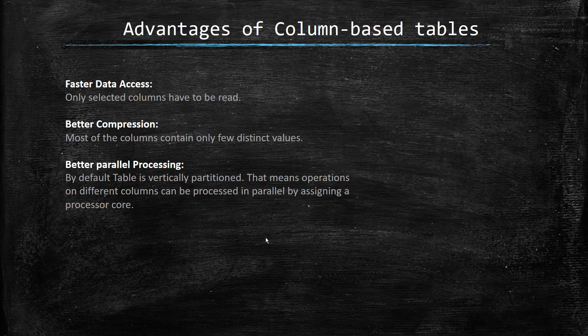This is a four-record case, but if we consider our previous example of one company with 10 million records in a sales table for 10 different products, the system will read only 10 records — you can imagine the performance gain. So to conclude: fast access and very good compression are two advantages. The third advantage with column store table is parallel processing. By default, each column table is partitioned vertically — each column is a separate partition. When reading two or three columns, if we have a four-core processor, it will assign one core to each column. Product and revenue will be read in parallel, so the processing speed is high. Parallel processing is another big advantage with column store tables.